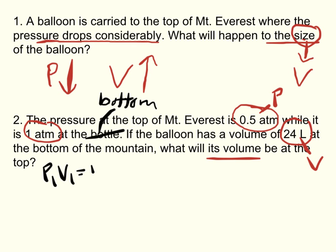Now, let's talk about plugging in the correct values. Our initial pressure at the bottom of the mountain is 1 atm. Our initial volume at the bottom of the mountain is 24 liters. The pressure at the top of the mountain is 0.5 atm, and we don't know the final volume. That's what we're trying to figure out.